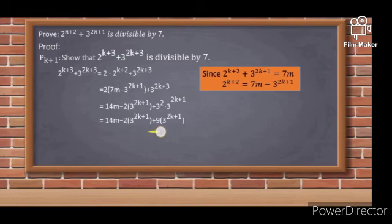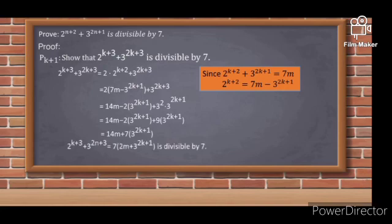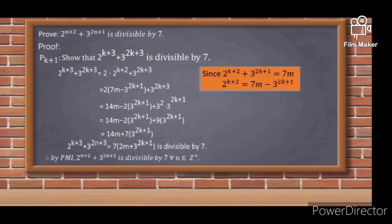As we notice, the terms with 3 to the power of 2k+1 are the same, so we can simplify. It becomes 14m plus 7 times 3 to the power of 2k+1. We factor out 7 so that the expression is divisible by 7. Therefore, 2 to the power of k+3 plus 3 to the power of 2k+3 equals 7 times (2m plus 3 to the power of 2k+1), which is divisible by 7. Therefore, by PMI, 2 to the power of n+2 plus 3 to the power of 2n+1 is divisible by 7 for all n in the positive integers.